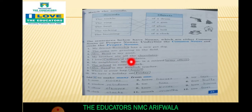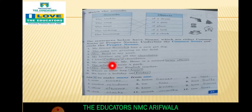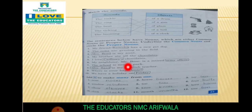My brother ate all the chocolates. Chocolate بھی عام سی چیز ہے اس لئے ہم نے اس کو underline کر دیا۔ I love Cadbury chocolate. Cadbury ایک special چیز کے بارے میں بات ہوئی ہے، صرف chocolate نہیں - اس لئے ہم نے Cadbury کو circle کر دیا۔